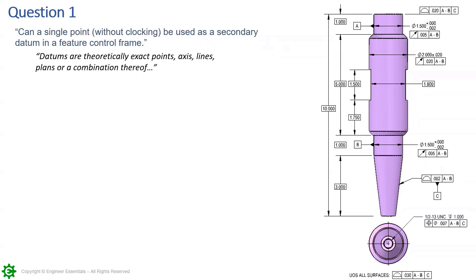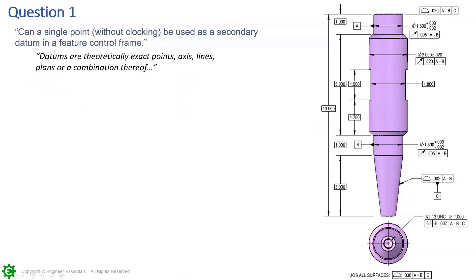If you all remember, datums defined by the standard are exact points, axes, lines, and planes, or a combination thereof. So we have theoretically exact points, lines, axes, and planes.